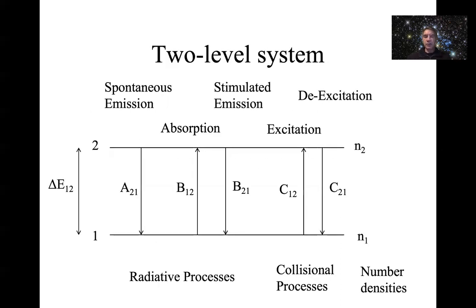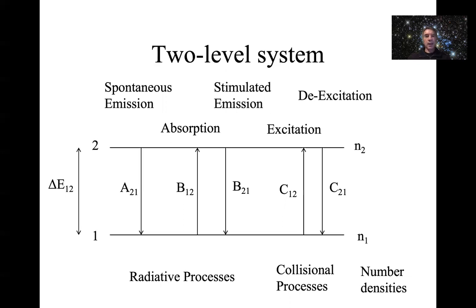Now I'll delve into the theory a little bit to get us going. To keep things simple — and this is often good enough for understanding what's going on — we use what's called a two-level system: just two quantum levels in an atom, ion, or molecule. The electron can be in one or the other of these levels, and will go up and down depending on various processes that can either excite it from level one up to level two, or de-excite it from level two back down to level one.